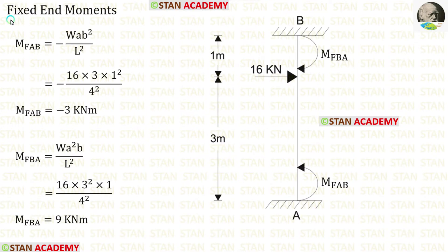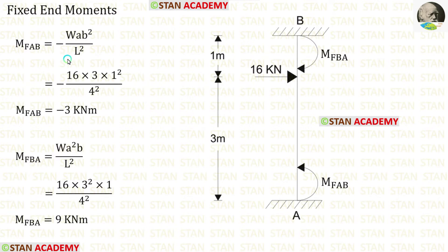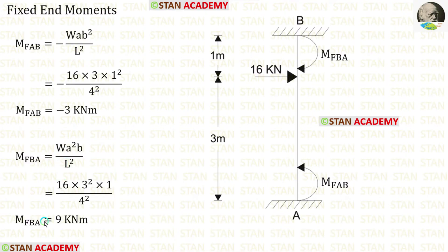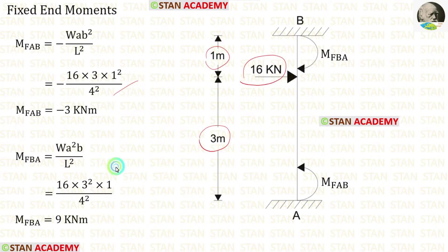Now let us find the fixed end moments. First, for column AB, which has an eccentric point load of 16 kilonewton. The formulas are minus W·A·B² / L² and plus W·A²·B / L². Applying values W = 16, A = 3, B = 1, we obtain M_AB and M_BA.